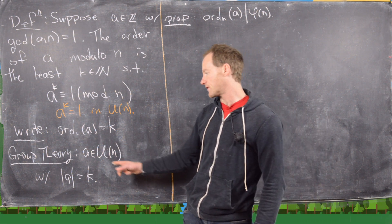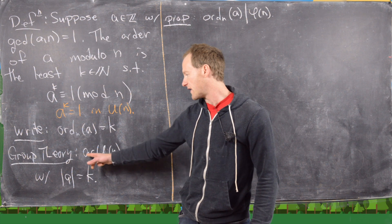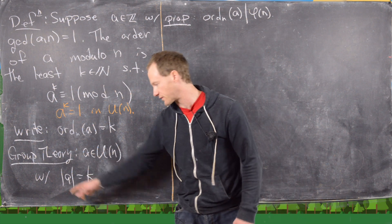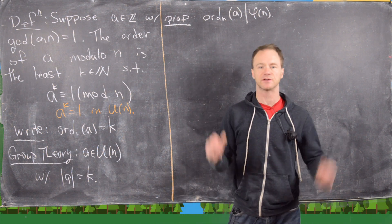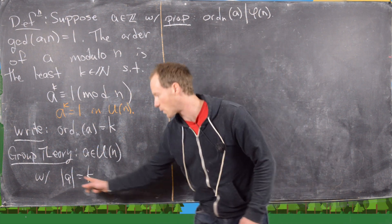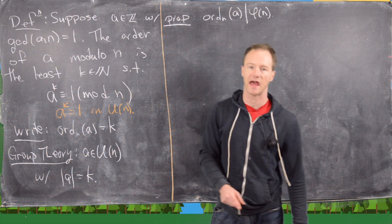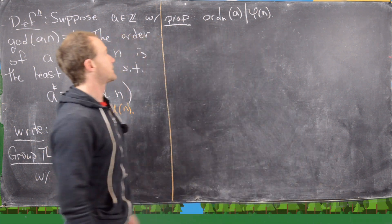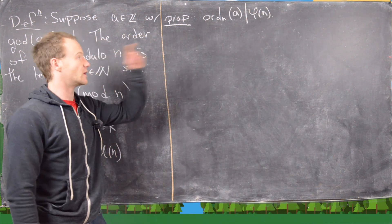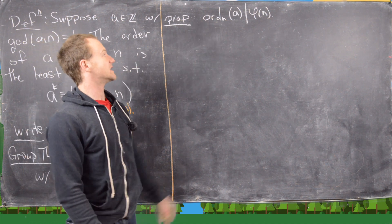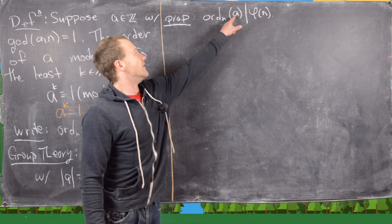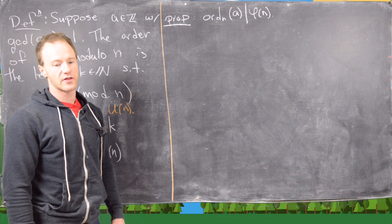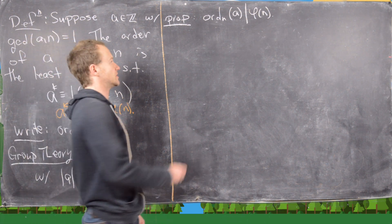In group theory, a is in the group of units and we write the order using absolute value signs around the a, so the order of a is k as an element of this group. The first proposition I want to prove is that the order of a with respect to n divides phi of n — in other words the Euler totient function. I'm going to do two versions of this proof side by side: a number theory version and a group theory version.